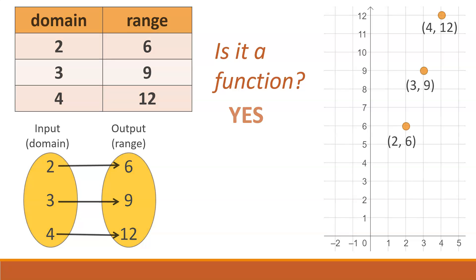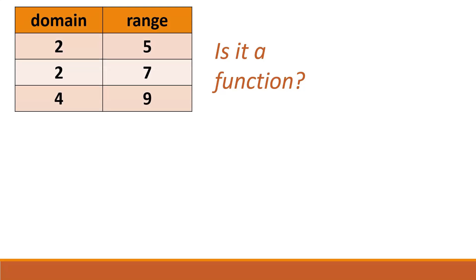Let's look at a different relation and answer the same question. Is it a function? We'll look at it first as a table, then as a mapping. The domain numbers are 2 and 4, and the range numbers are 5, 7, and 9. We can see in the first line that 2 maps to 5. In the second line, 2 maps to 7, and in the third line, 4 maps to 9.